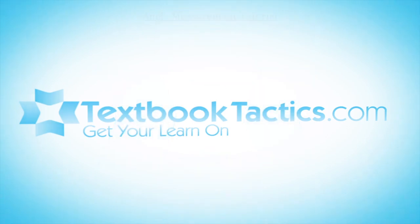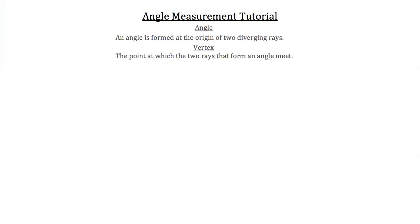This is the angle measurement tutorial. An angle is formed at the origin of two diverging rays, and the vertex is the point at which the two rays that form an angle meet.